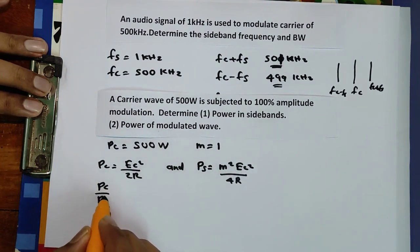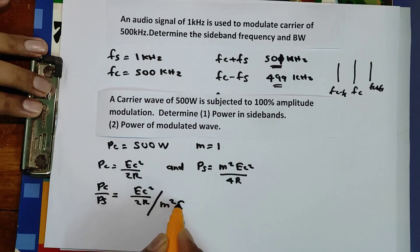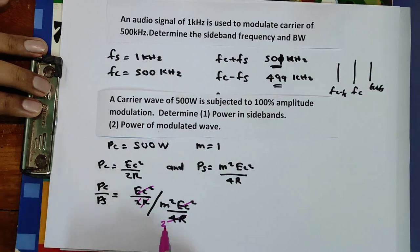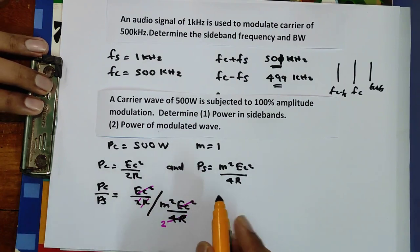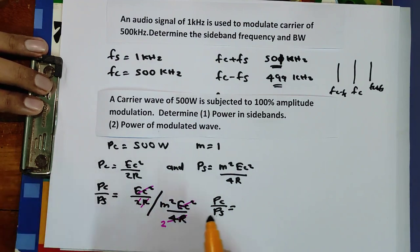Dividing Pc by Ps: Pc/Ps = (Ec²/2R) / (m²Ec²/4R). Cancelling Ec² and the R terms gives a factor of 2. So Pc/Ps = 2/m².